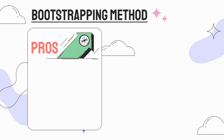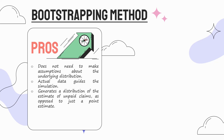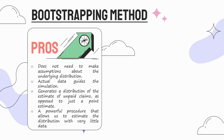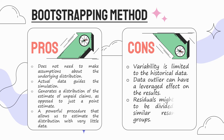The pros of the bootstrapping method are: it does not need to make assumptions about the underlying distribution; the actual data guides the simulation; it generates a distribution of the estimate of unpaid claims as opposed to just a point estimate; and it is a powerful procedure that allows us to estimate the distribution with very little data. The cons are: variability is limited to the historical data, data outliers can have a leveraged effect on the results, and residuals might need to be divided into similar resampling groups.